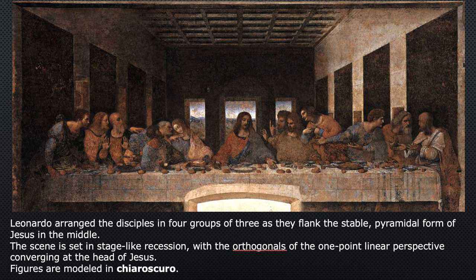After describing the event and looking at all 12 men, students are often asked to pick out the betrayer. The answer: it's this man here, whose face is in the shadow — that's the device Leonardo used to single him out, showing him in darkness. Judas is also clinging to a bag of coins, signifying the payment he was given for betraying Jesus.